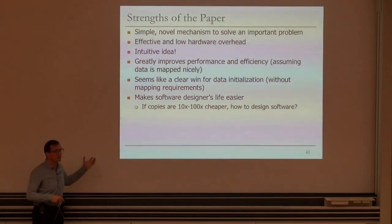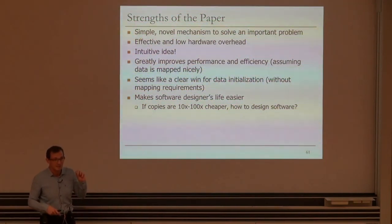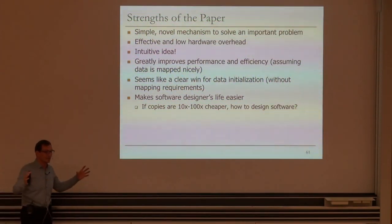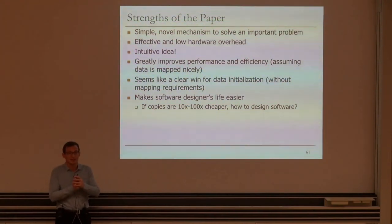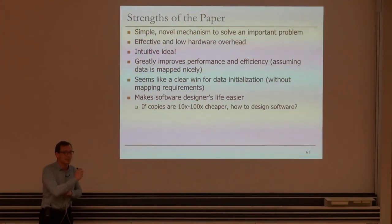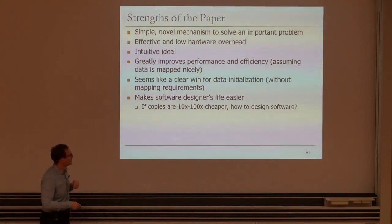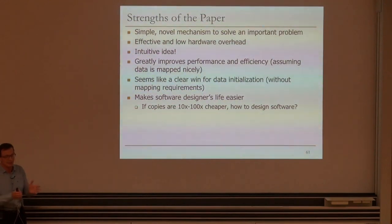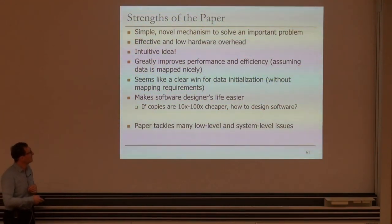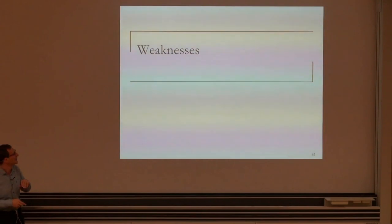Another strength: it makes software designers' lives easier. Today, there is huge software effort to minimize copies because they're expensive. At VMware, for example, they heavily optimize to minimize copies in VM cloning and deduplication, making software extremely complex. If copies are 10x to 100x cheaper, you can take a different mindset — just copy and be done with it. The paper also has end-to-end thinking, tackling many low-level and system-level issues, and is well-written and insightful.